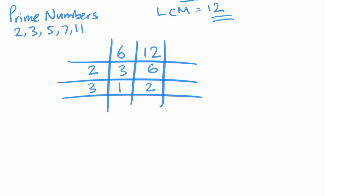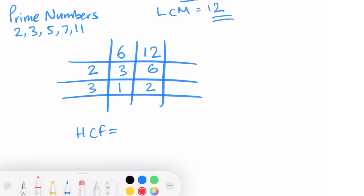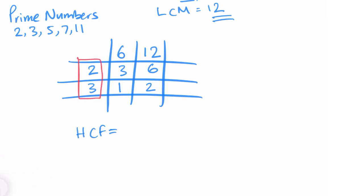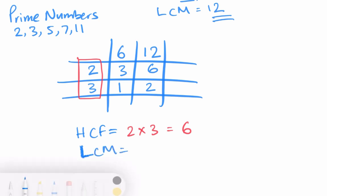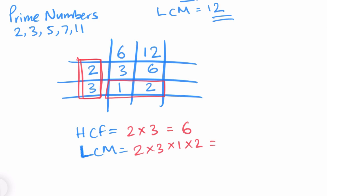Now, the smallest prime number that goes into three and six is three: three goes into three once, three goes into six twice. There's no prime number that goes into one and two, so we stop. For the highest common factor, multiply the numbers on the left side: two times three equals six. For the lowest common multiple, multiply all the numbers — the left side and the bottom row: two times three times one times two equals twelve.